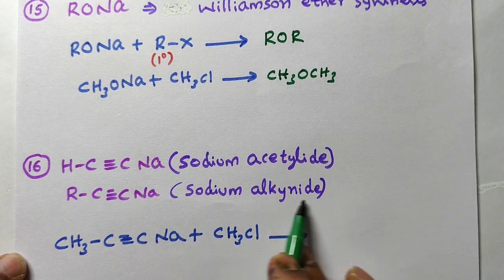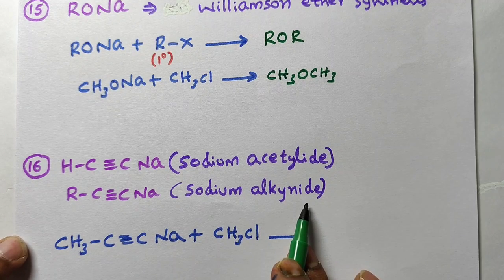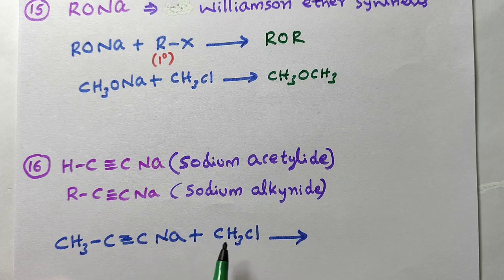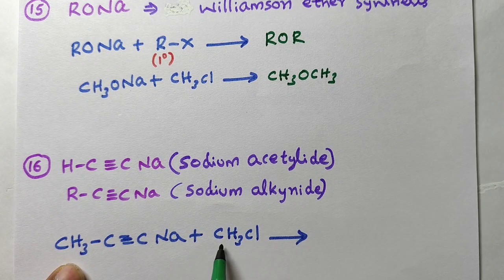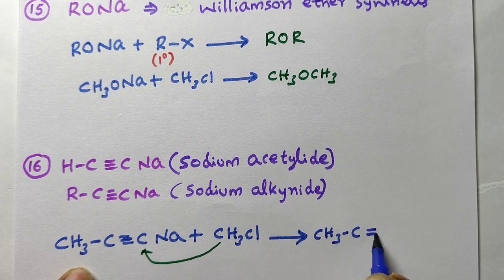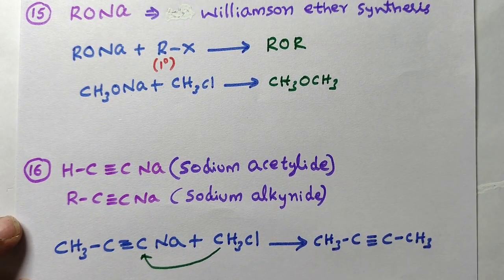Next: sodium alkylide, which is used to increase the number of carbons in the alkyl chain. For example, sodium propylide (3 carbons) reacts with methyl chloride; the CH3 group attacks to give a 4-carbon alkyne — CH3-C≡C-CH3. You can increase the number of carbons using this reaction.